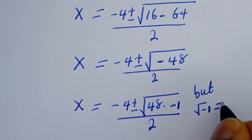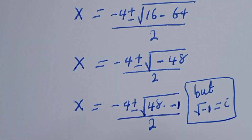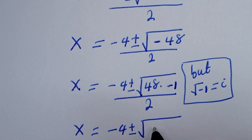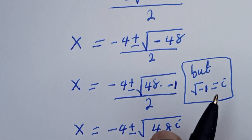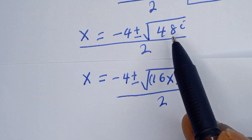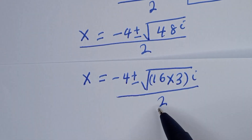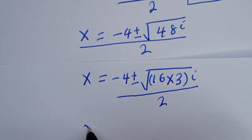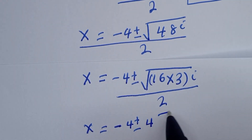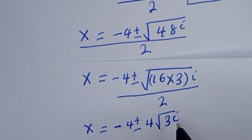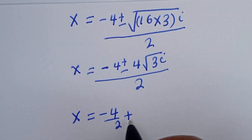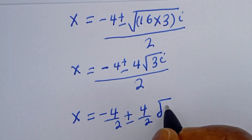This minus 48 can be written as 48 multiplied by minus 1, and square root of minus 1 is equal to i. Then s will be equal to minus 4 plus or minus square root of 48 times i, everything over 2. Square root of 48 can be written as square root of 16 multiplied by 3, so that gives 4 root 3. Then s is equal to minus 4 over 2 plus or minus 4 over 2 times root 3 times i.